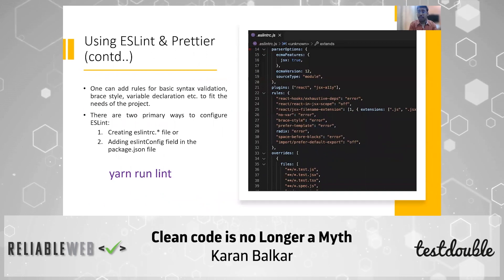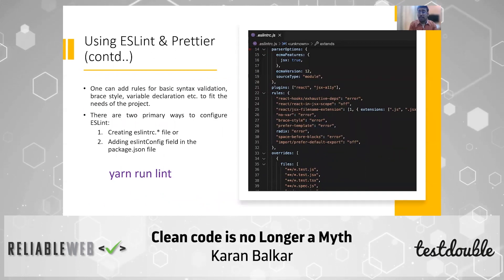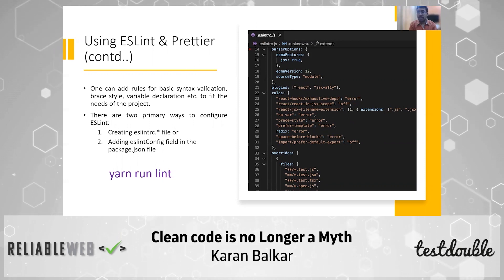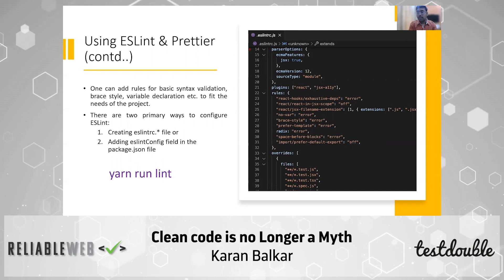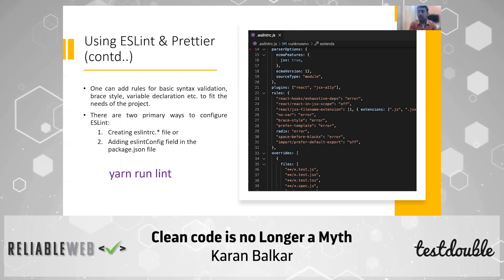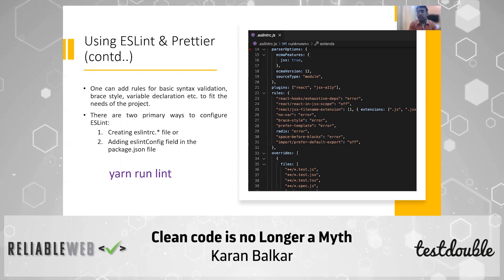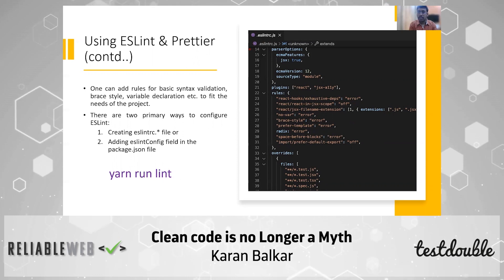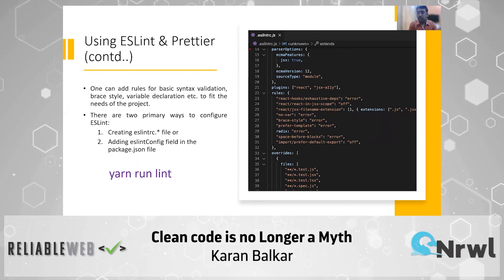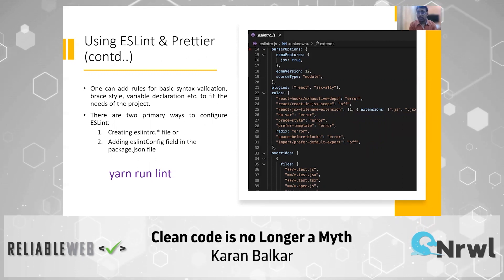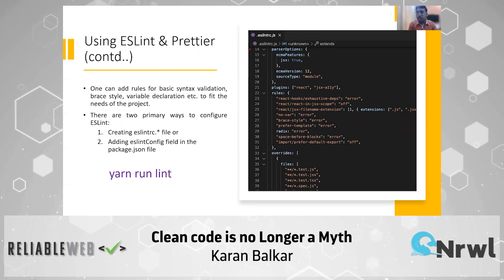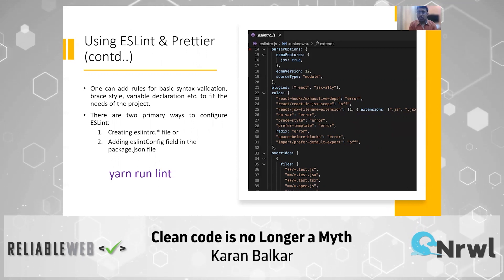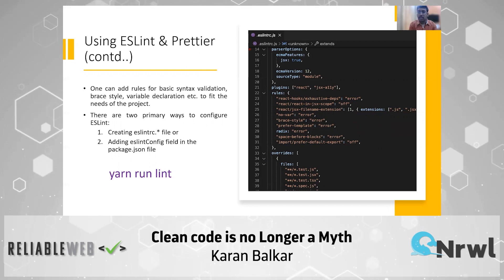Using ESLint, one can write certain rules that can vary — for basic syntax validation, brace styles, variable declaration, etc. — depending on project needs. There are two ways to configure ESLint: by creating an .eslintrc.js file or by adding the ESLint config field to the package.json file. Here I've gone with the first approach, creating an .eslintrc.js file with all the rules applicable to my project. This is a basic example, but one can extend it to handle different types of rules for variable declarations, brace styles, and more.